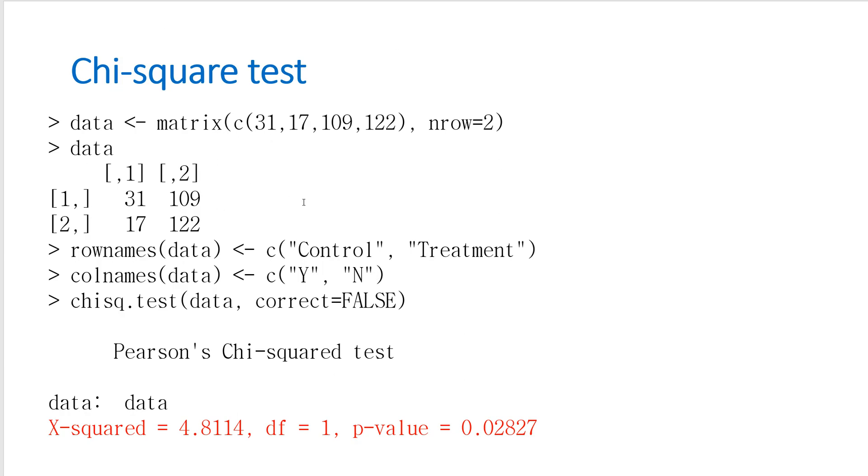This is our program to conduct Chi-square test. As you can see, under 5% significance level, p-value is less than 5%. Then we can reject null hypothesis. So it means that this matrix has a significant association between them.